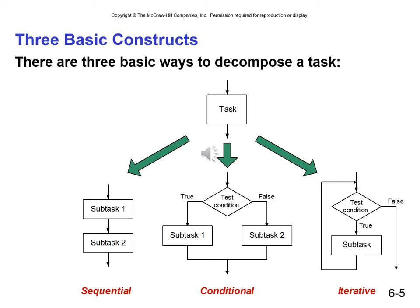We can decompose a task using one of the three basic programming constructs: sequential, which is the standard linear flow of control — do this, then do this, then do this; conditional, in which we test a condition, and if it's true we implement subtask 1, if it's false we implement subtask 2; and the third being the iterative or looping construct, where we test a condition, and if it's true we implement a subtask and then go back and test the condition again, continuing to implement the body of the loop until the test condition returns false.